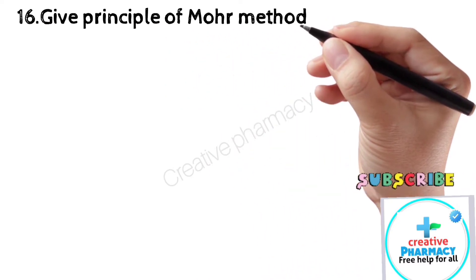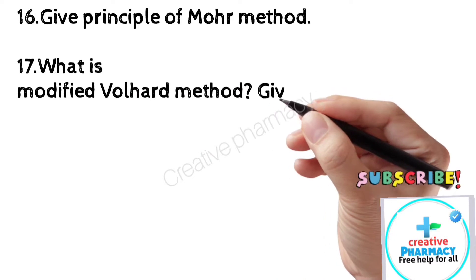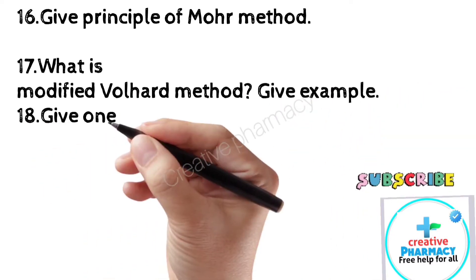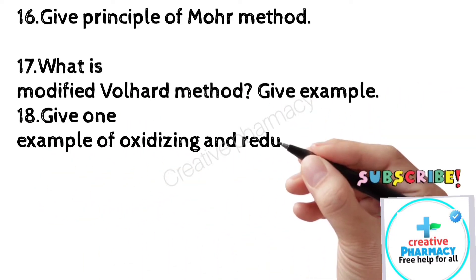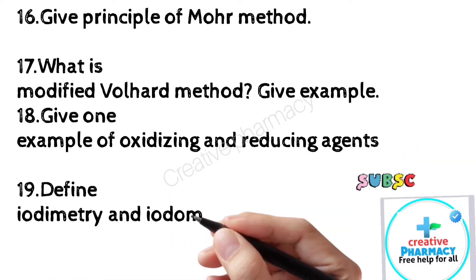17. What is modified Volhard method? Give example. 18. Give one example of oxidizing and reducing agents. 19. Define iodimetry and iodometry. 20. Give Ilkovic equation.